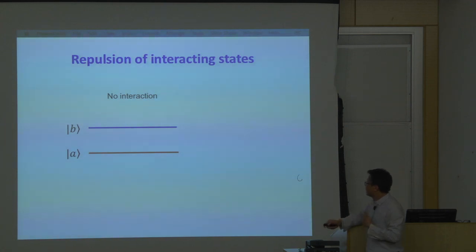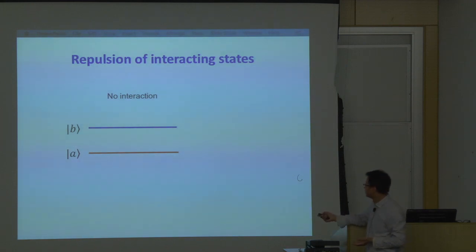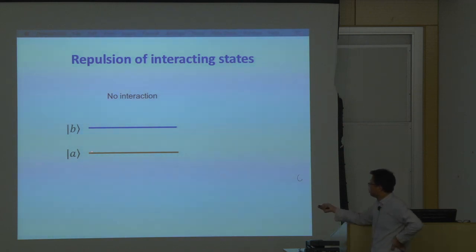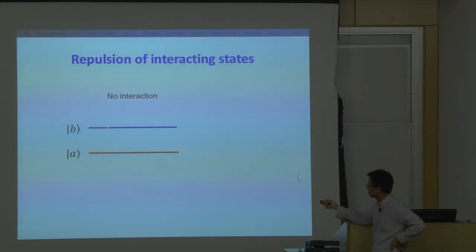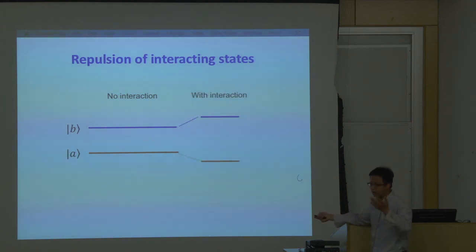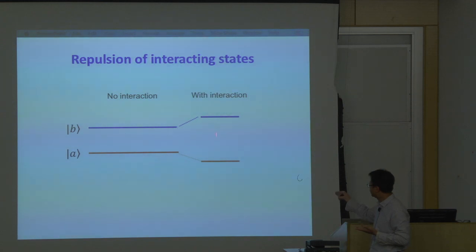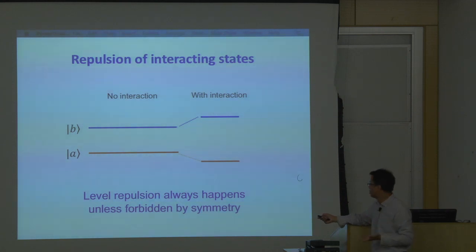To begin with, let me tell you the basic principle of how we can use light to change the energy level. Consider a simple two-level system, A and B. Suppose there is no interaction between A and B. Now let's turn on some interaction. This interaction mixes the two states, and you have to re-diagonalize the Hamiltonian. The net result is that the renormalized states have a larger energy separation — this is called level repulsion or state repulsion. Level repulsion always happens unless some symmetry in the crystal suppresses the interaction.